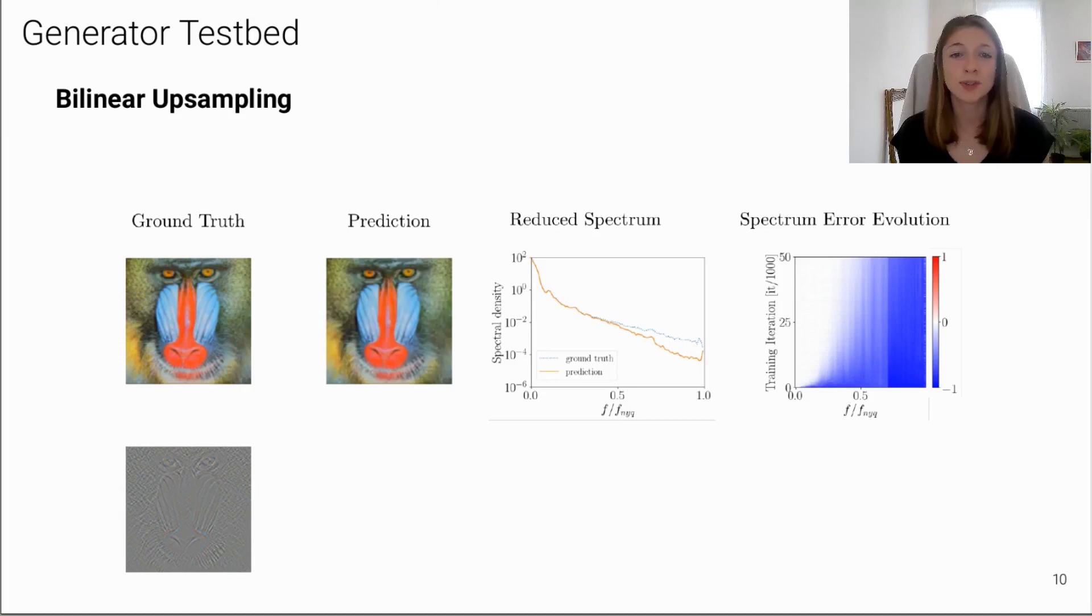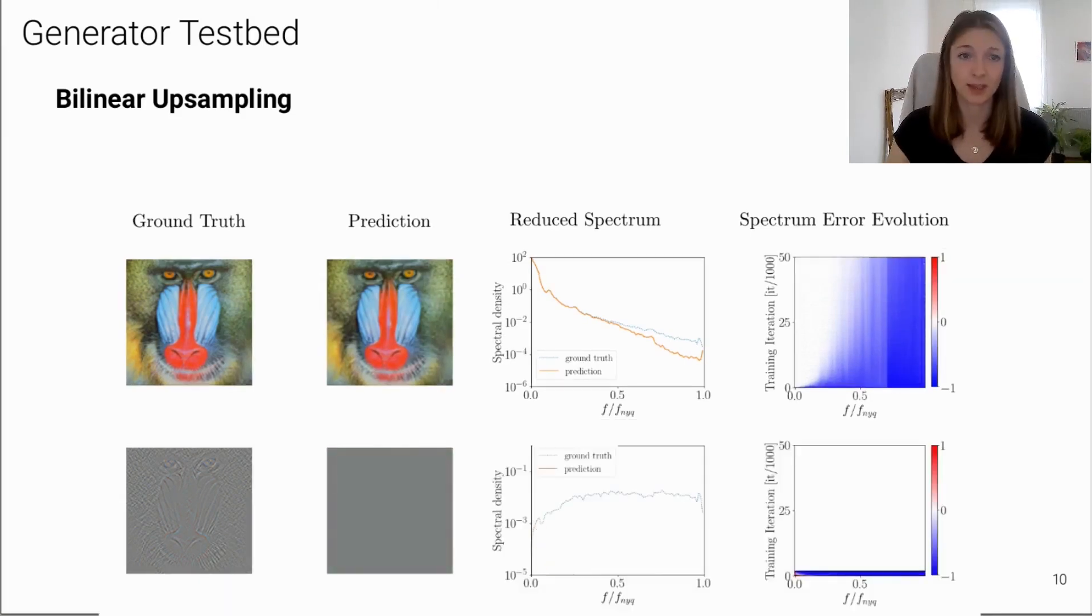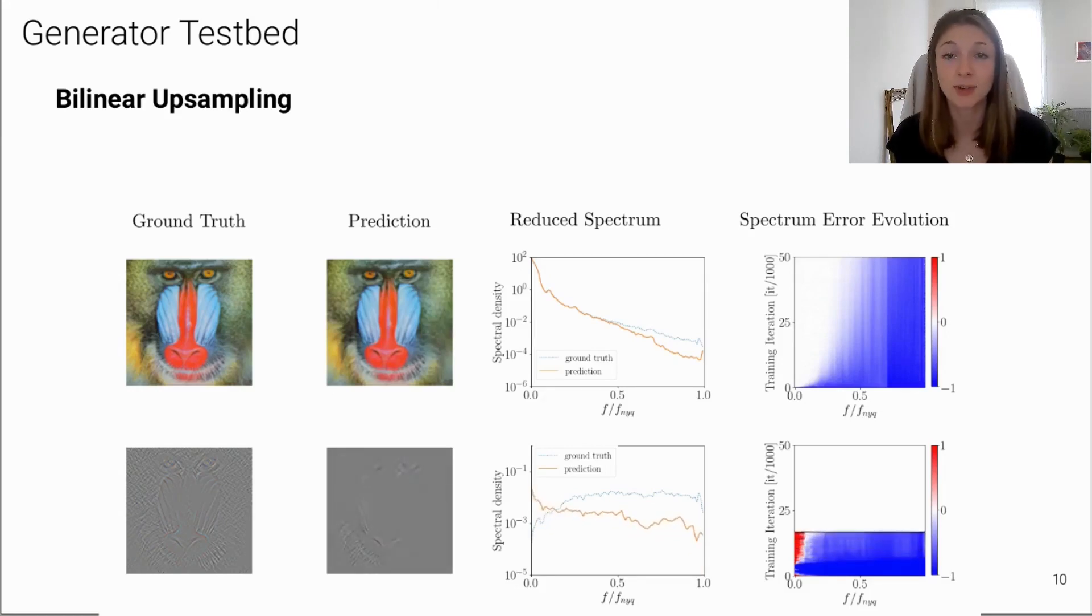In addition, we also consider a high-pass filtered version of the image just to make sure that these findings do not depend on the spectrum itself. As you can see, the behavior is very similar, also when higher frequencies are dominant in the training data.